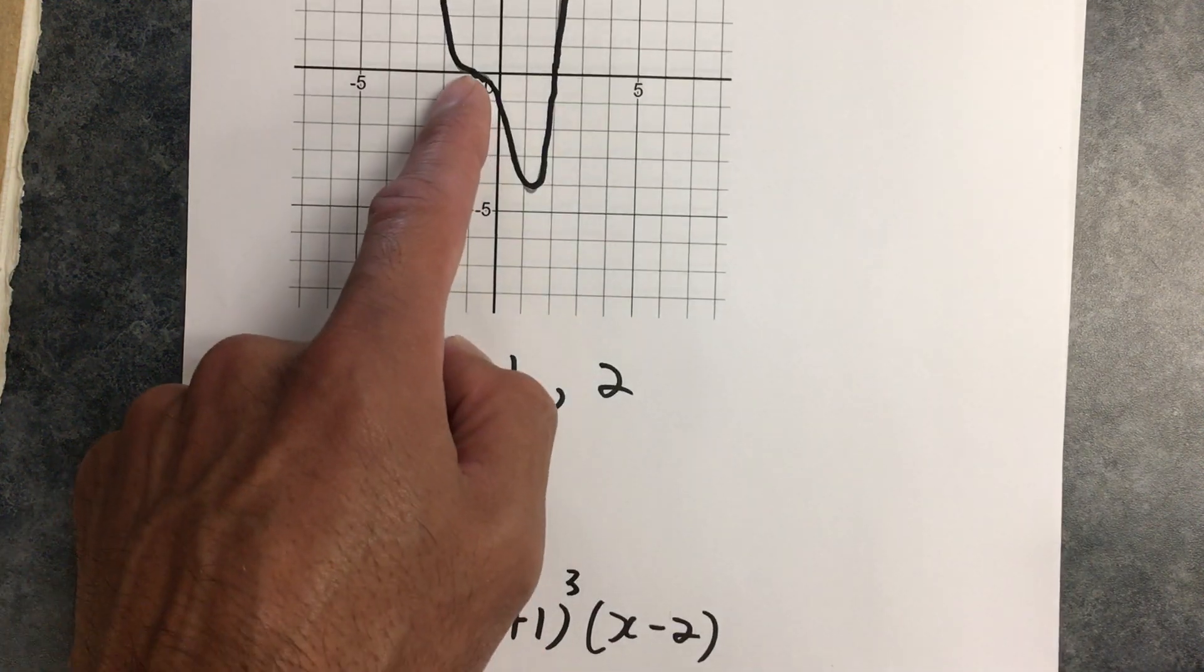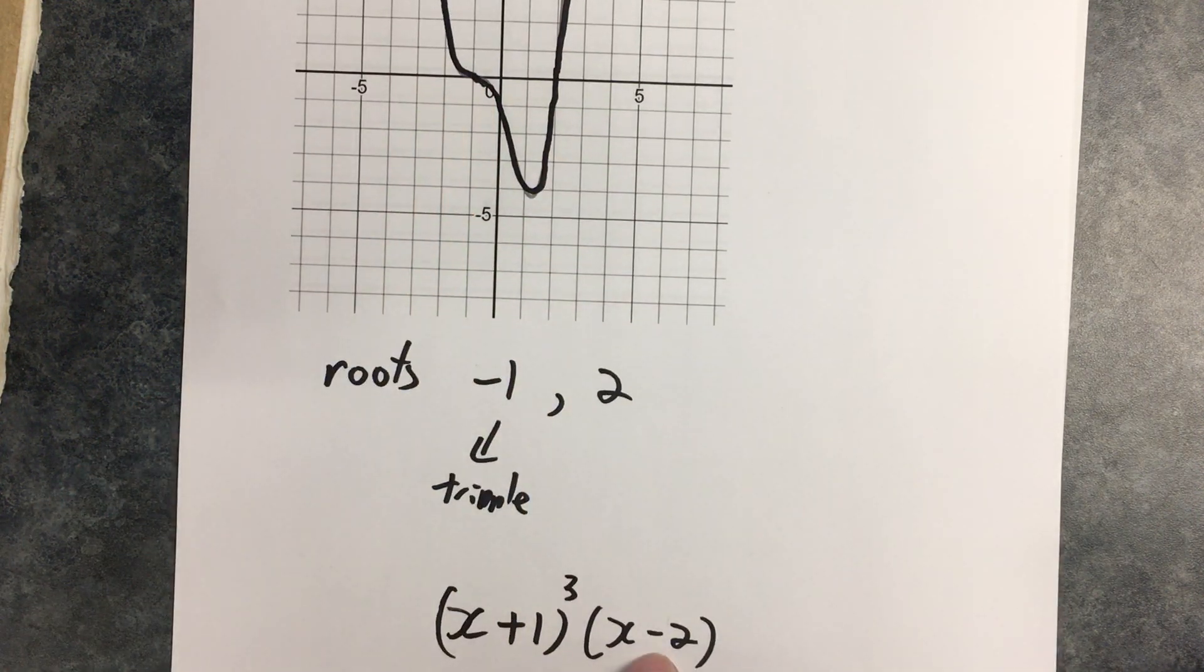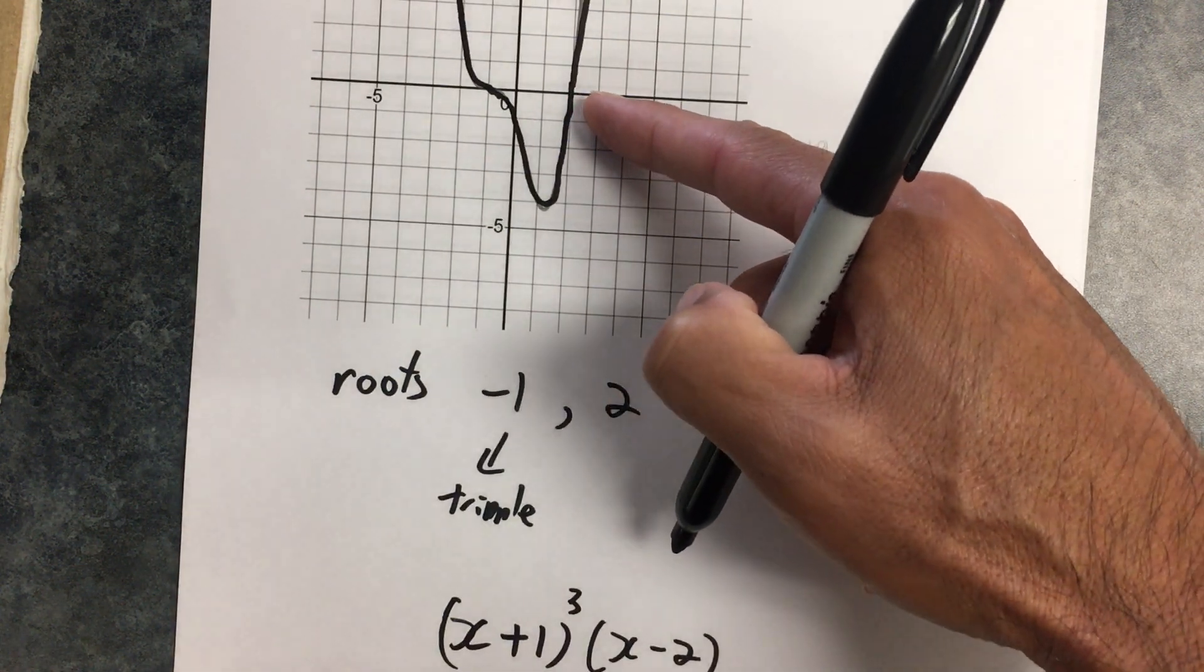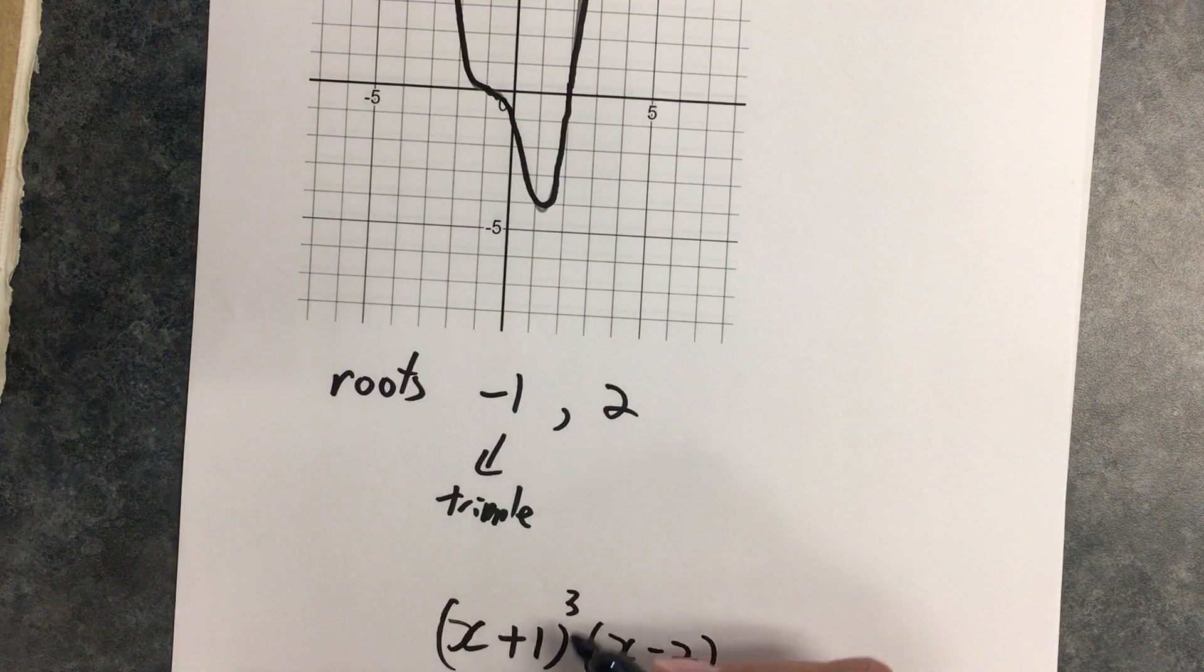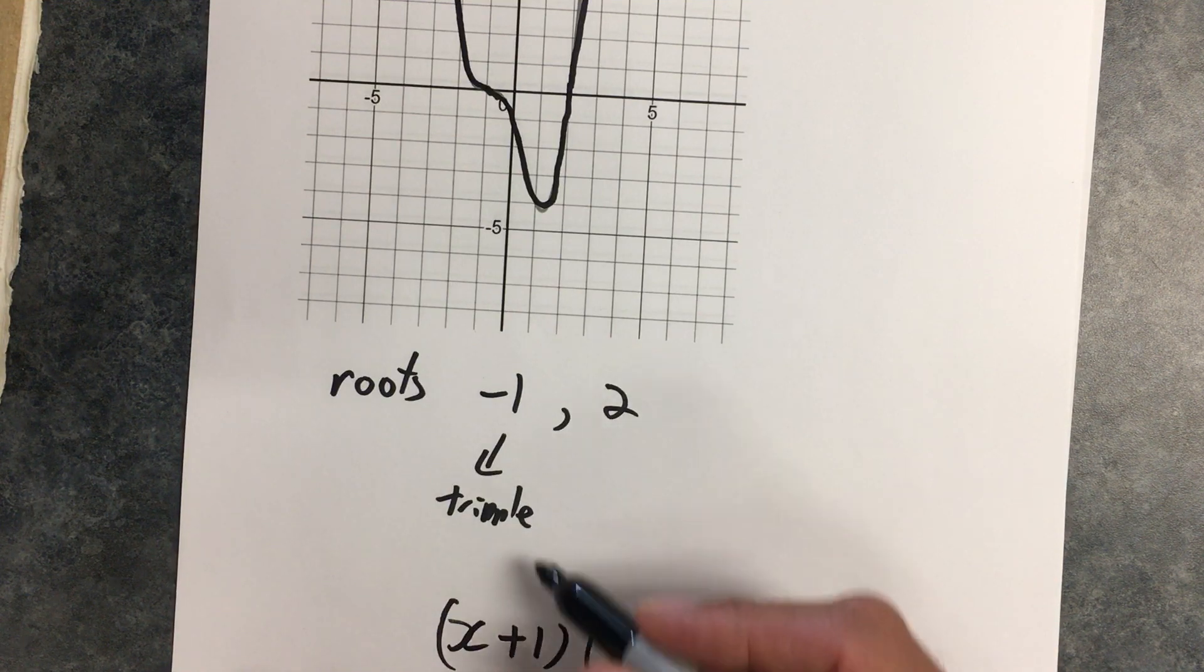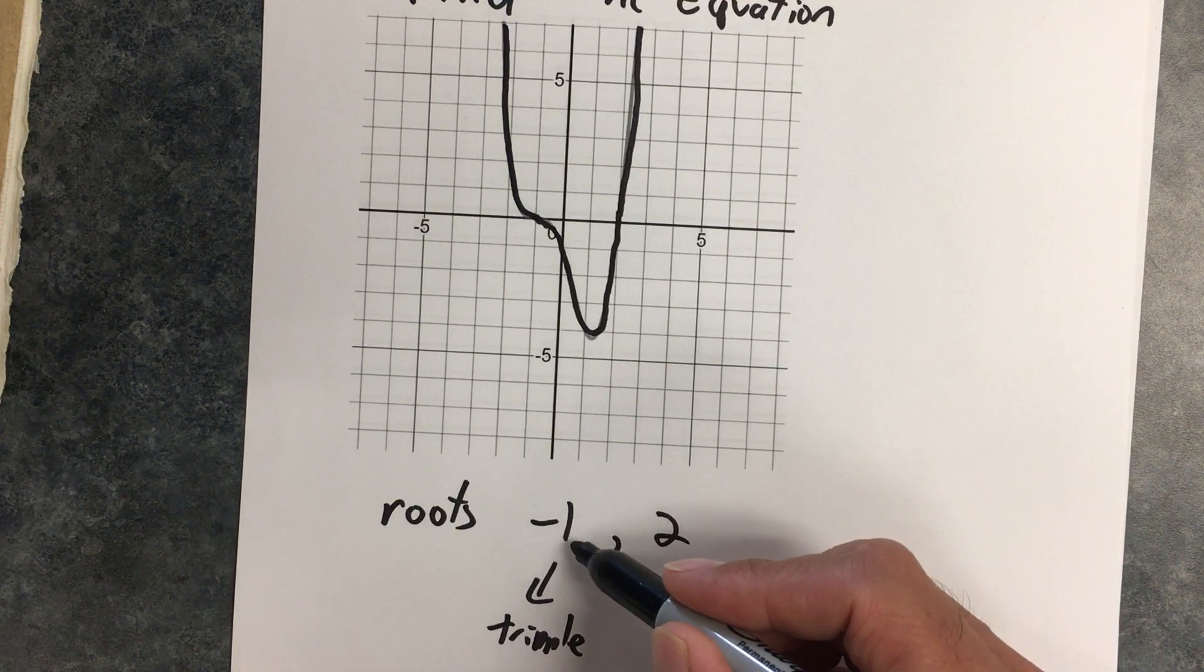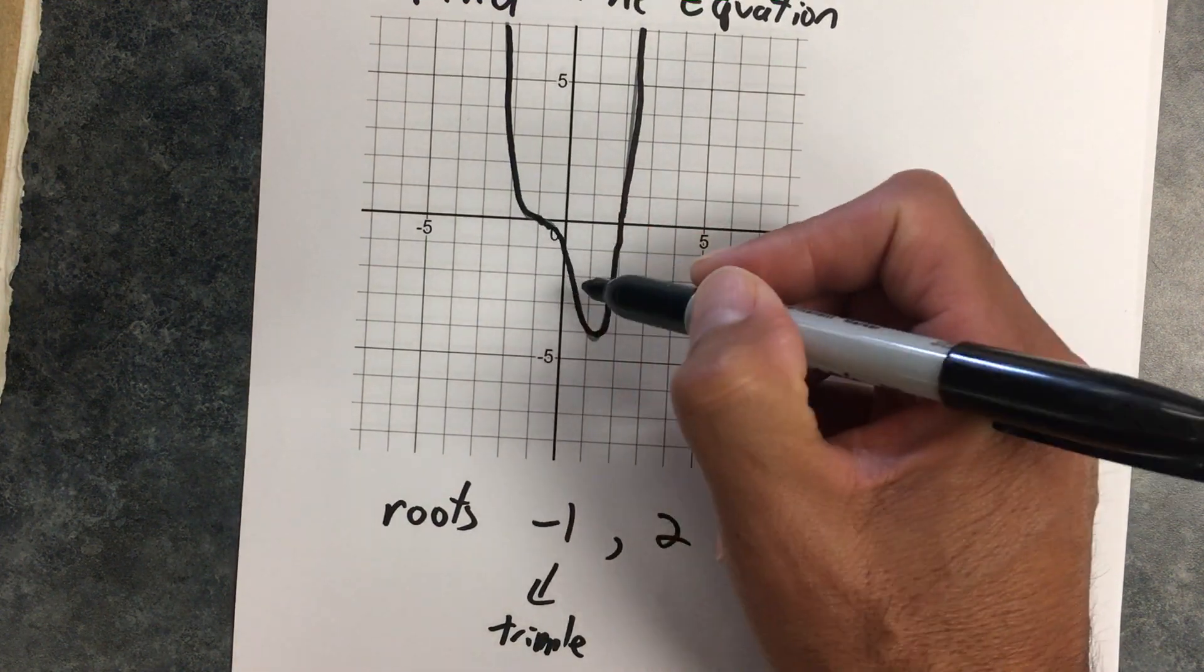(x + 1), because I have a root at negative 1. (x - 2), because I have a root at plus 2. And I'm cubing the (x + 1) because the root of that, minus 1, is a triple root, and I know that by the shape.